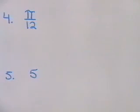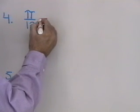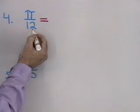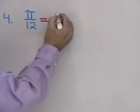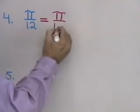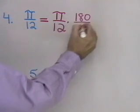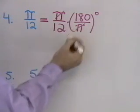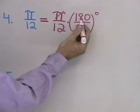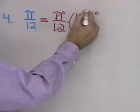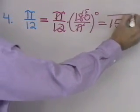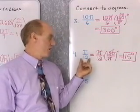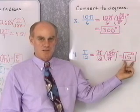Next problem: convert π over 12 radians to degrees. Since π over 6 is 30 degrees, π over 12 is half of that, so it should be 15 degrees. Going through the conversion: π over 12 times 180 over π degrees. The π's cancel, 12 divides into 180 fifteen times, giving 15 degrees. So π over 12 radians and 15 degrees are the same thing.